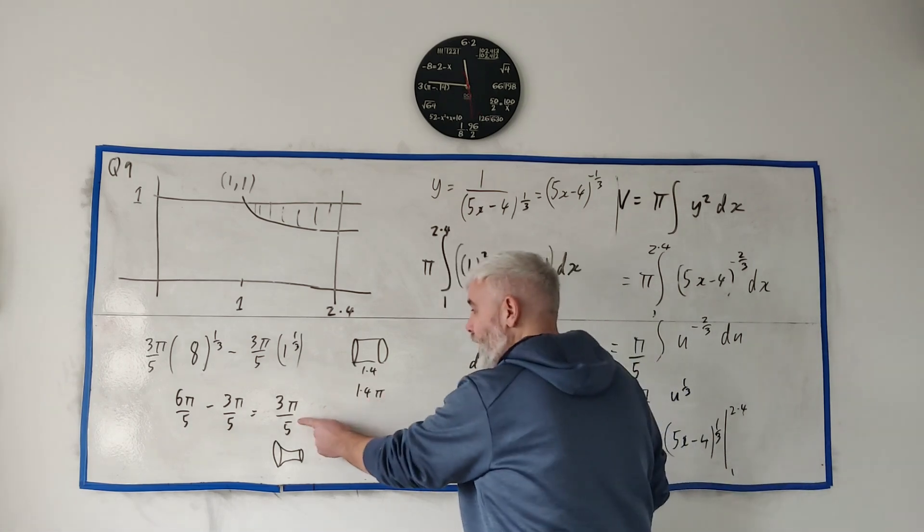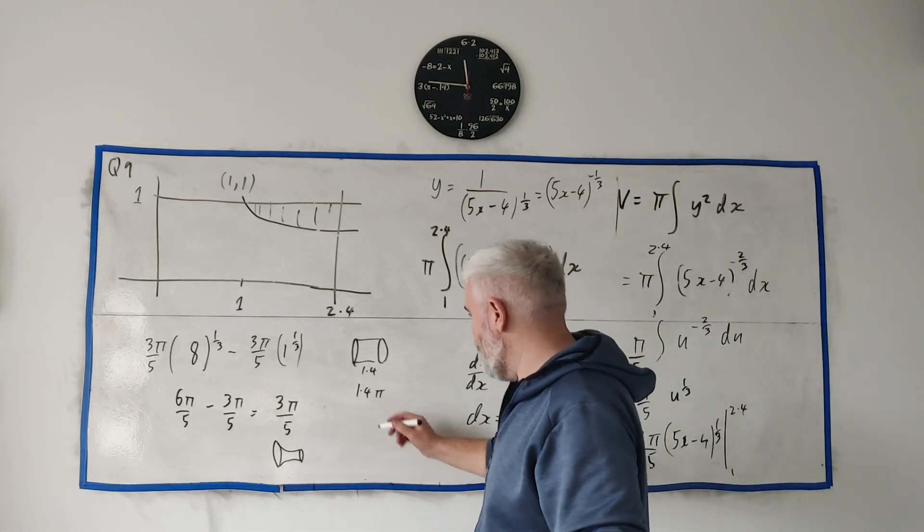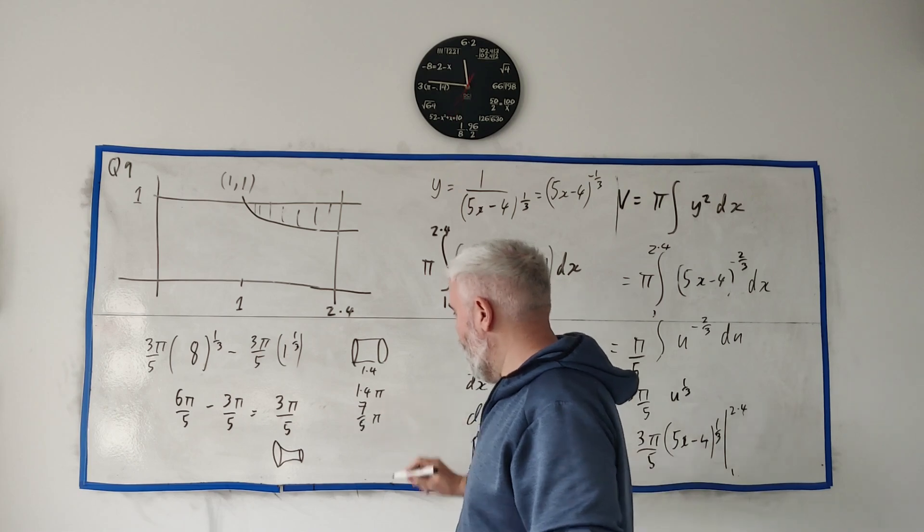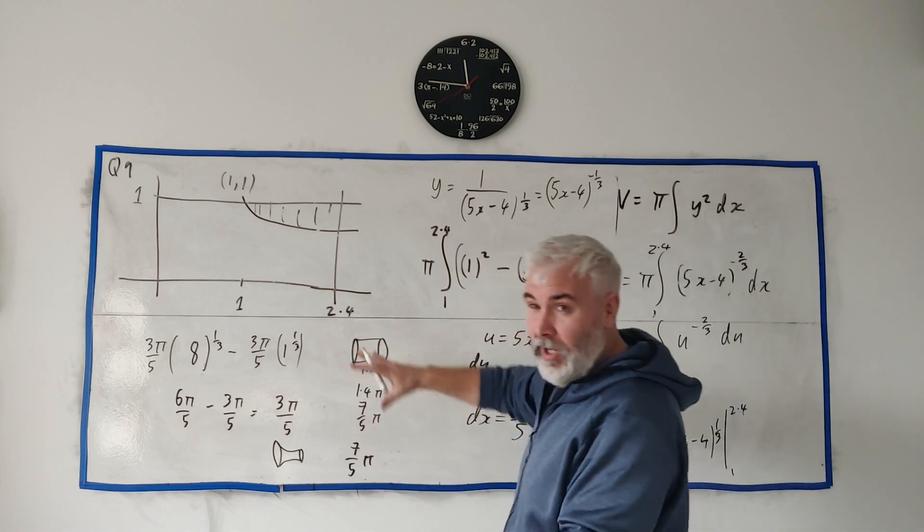We just take this minus this to get our final answer. And let's put this in a fraction I suppose, that is 7 over 5 pi.